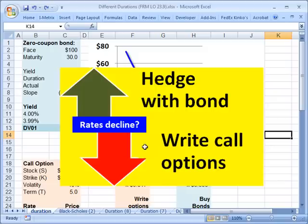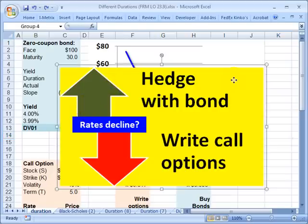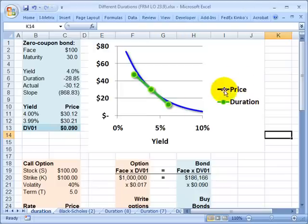In other words, we sold call options or we took a short position in call options. If we write the call options, we may be concerned about an interest rate decline. Because if interest rates go down, the owner of call options gains and the seller of call options loses. One thing we could do to offset that is to hedge with bond instruments because the bond will increase in price if interest rates decline.